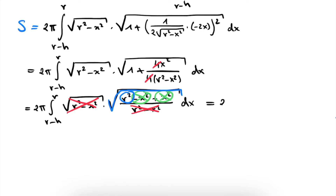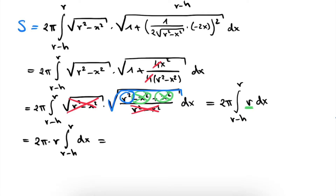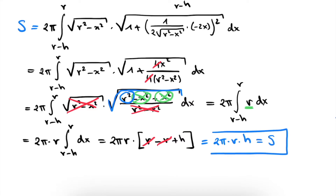This means our integral becomes 2 pi times the integral from r − h to r of r dx. Since r is independent of x, it can be pulled outside the integral. This simply evaluates to 2 pi × r × (r − (r − h)), and we are left with 2 pi times r times h. This is the surface of our spherical cap — a very easy formula.